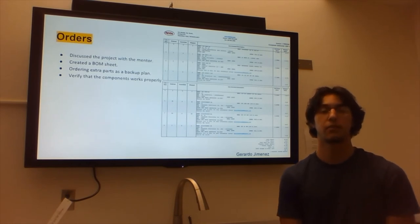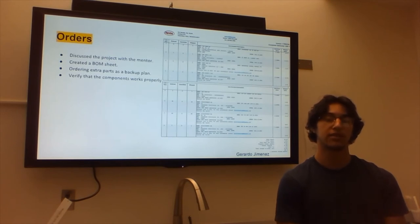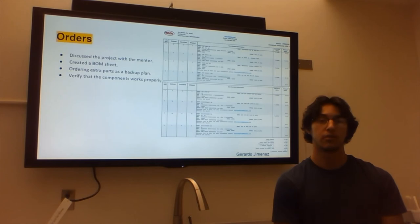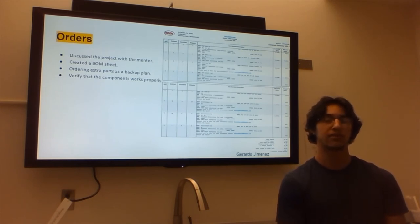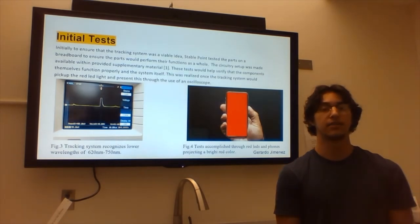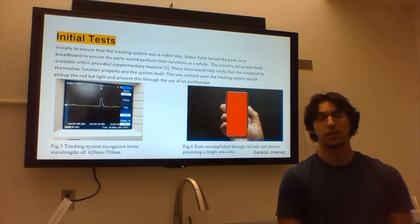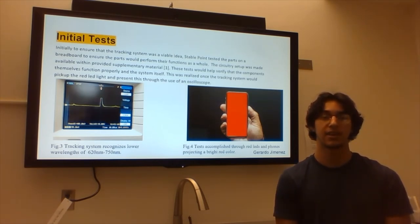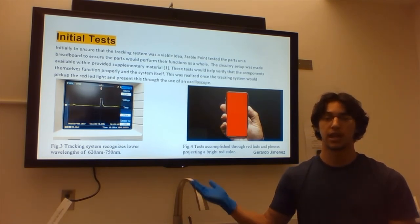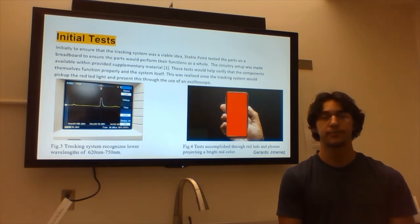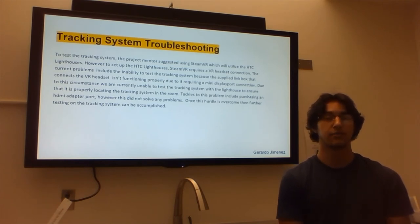This slide shows the orders we have fulfilled — all the parts obtained to finish the tracking system. We discussed and justified each order with our mentor Robert, and verified the parts were properly functioning. We also ordered extra parts to ensure we had spares in case of faulty or broken parts during testing. Initial testing had us building the tracking system on a breadboard, using a photo diode to pick up a red LED signal, and we connected it to an oscilloscope to ensure it correctly picked up the signal — which it did.